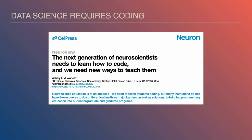Doing data science ultimately requires coding or programming — writing instructions for a computer using a specific language. Historically in neuroscience, coding hasn't been a core part of most curricula, but it's increasingly become clear to educators and neuroscientists that this has to change. For example, a paper published in the journal Neuron in 2021 said the next generation of neuroscientists needs to learn how to code and we need new ways to teach them. And here is a course that is going to do just that.